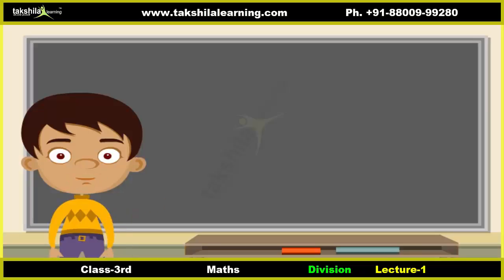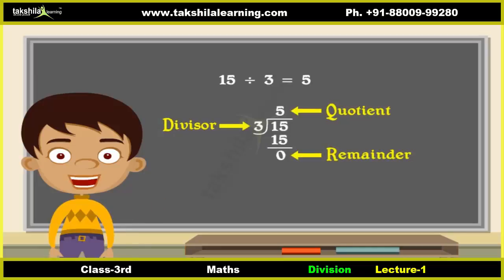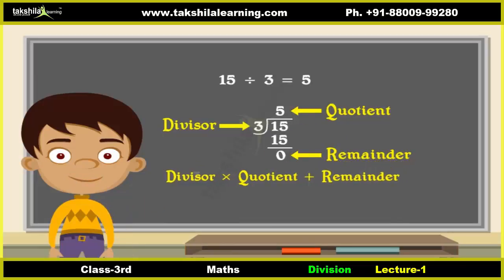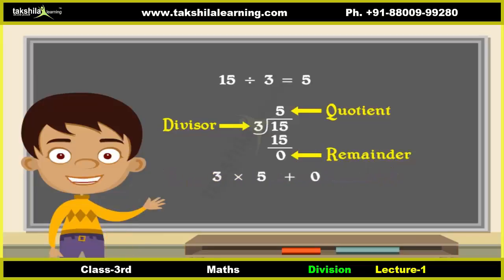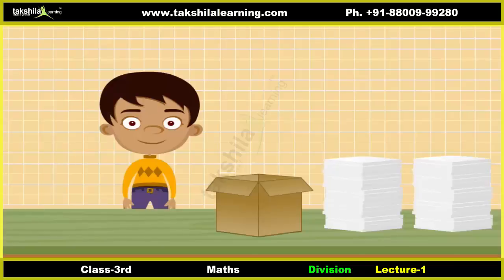There should be a way to check your answer — let us look into it now. Remember that fifteen divided by three is five. Is this answer correct? Let us check it. The divisor is three, the quotient is five, and the remainder is zero. To check the answer, multiply the divisor and the quotient, then add the remainder to the result. If the answer equals the dividend, then the answer is correct. Here the answer is fifteen, which equals the dividend, so the answer is correct.